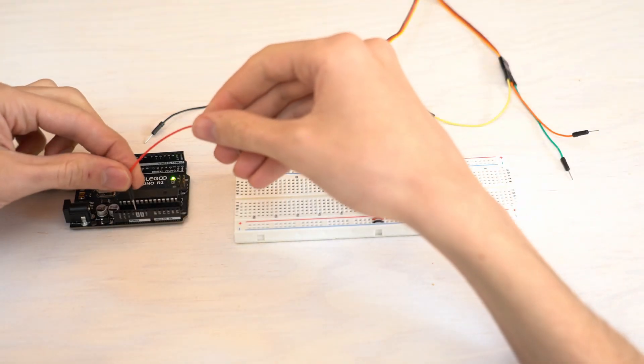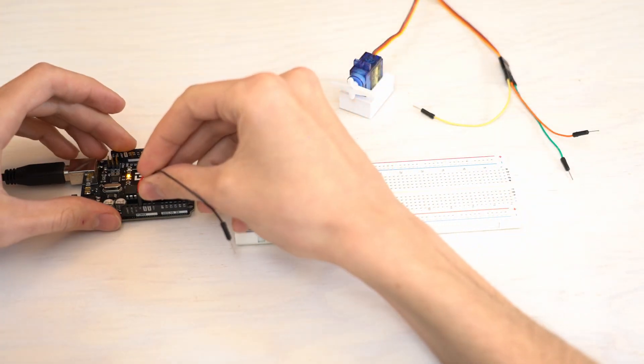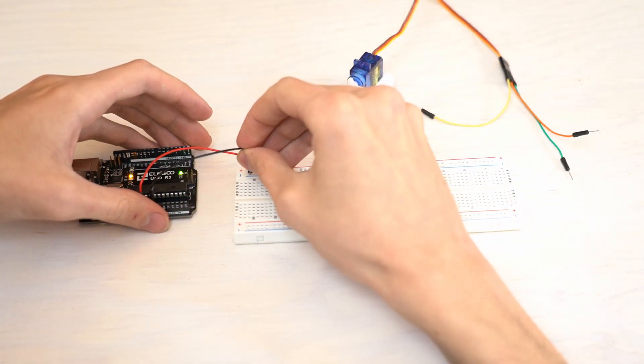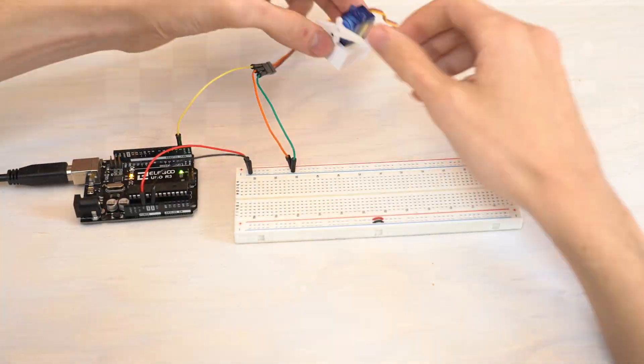Finally, MadMapper also supports servo motors. Connect the positive and negative poles like previously. Attach the servo motor to pin 3 and to the two poles.